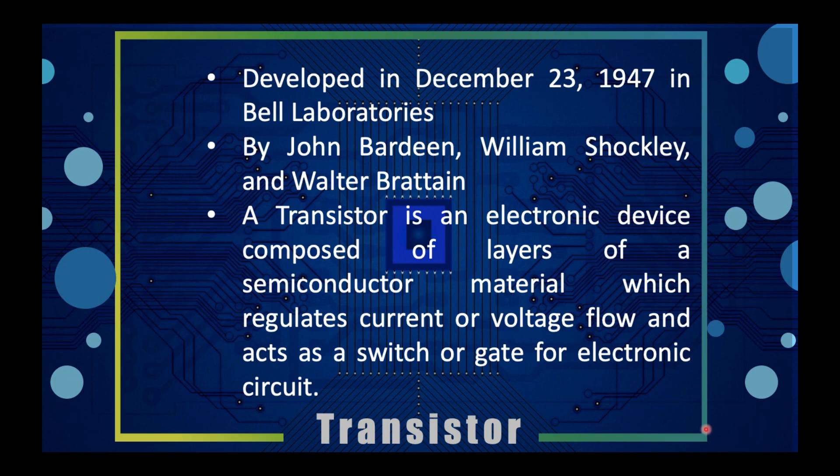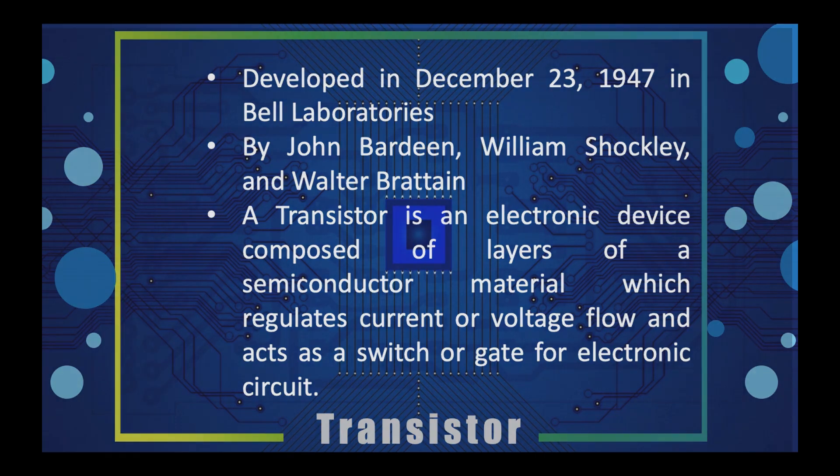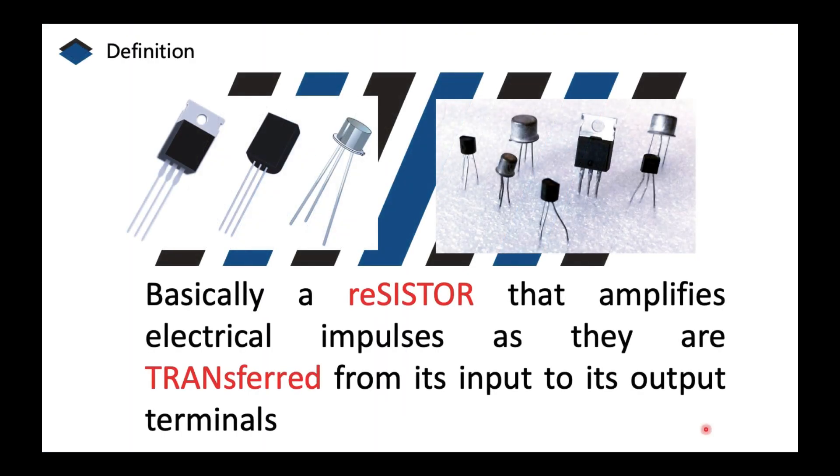We defined a diode as an electronic switch. A transistor could also be defined as an electronic switch. So aside from diodes, transistors, thyristors, and many more electronic devices are being used as electronic switches. Another definition of transistor is that basically it's a resistor that amplifies electrical impulses as they are transferred from its input to its output.